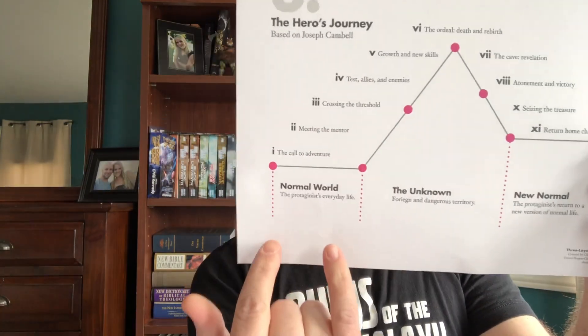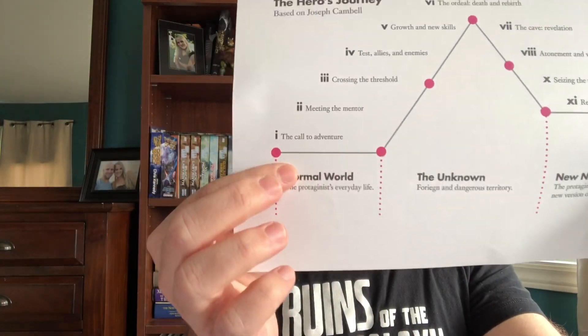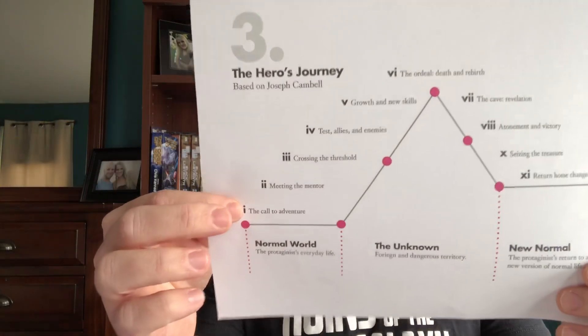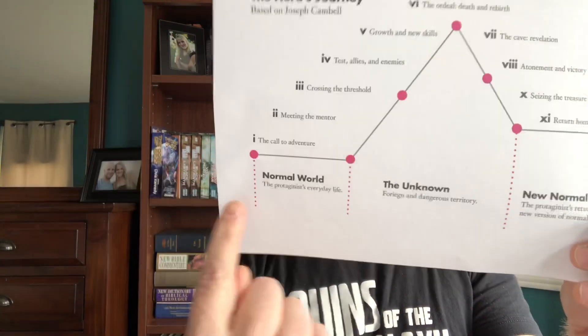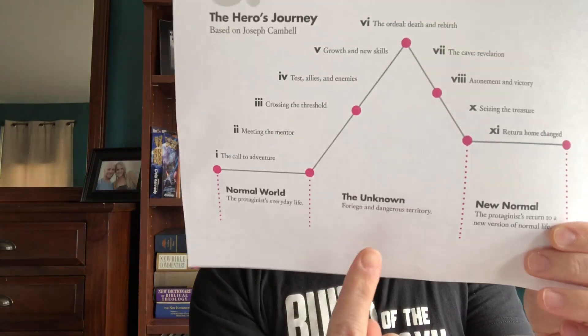The first section is the normal world — where the character finds themselves in their ordinary life. It might not be normal for other people, but for them it is. I think of the movie Cars with Lightning McQueen: he's this rookie all-star, and to him this is his normal world. The very first point is the call to adventure. For Lightning McQueen, this is where he gets thrust out of the back of Mac the truck in the middle of the night. Sometimes the call is arbitrary, sometimes intentional, sometimes an accident or emergency — but in whatever case, this is the call into adventure, heading into the unknown, which is foreign and often dangerous territory.